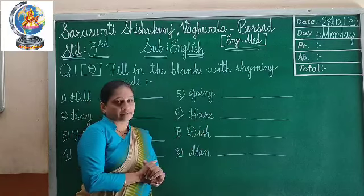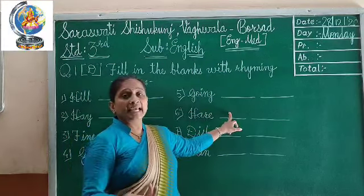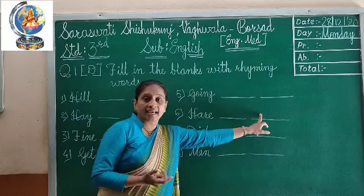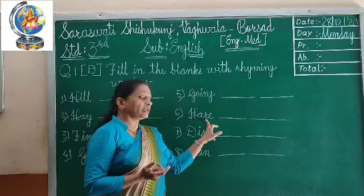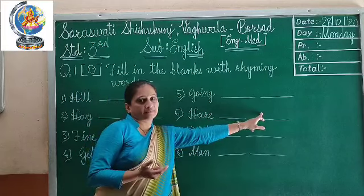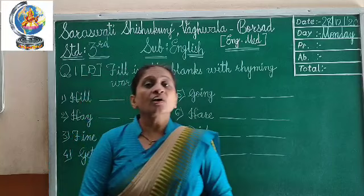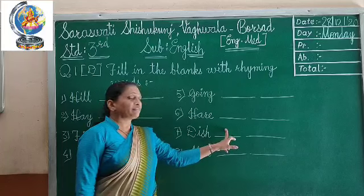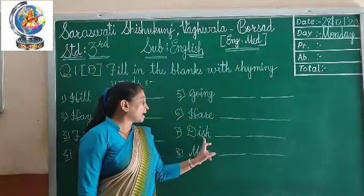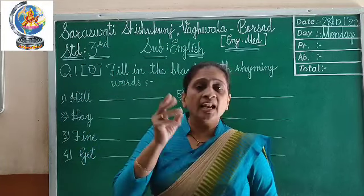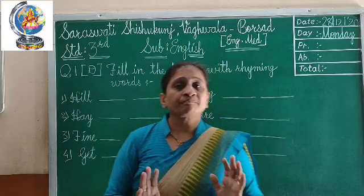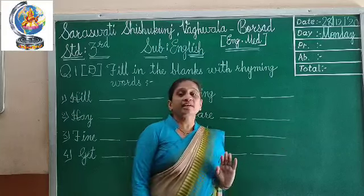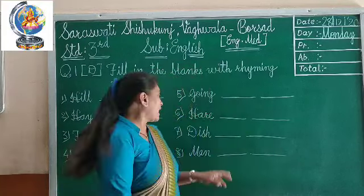Now for H-A-R-E — 'hare' — you can write B-A-R-E — 'bare' — and C-A-R-E — 'care.' The A-R-E letters will be the same. Then for 'dish,' you can write F-I-S-H — 'fish' — and W-I-S-H — 'wish.' The I-S-H letters will be the same — the last three letters should be there.